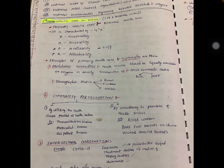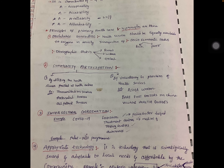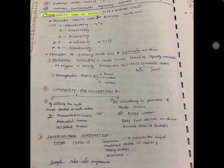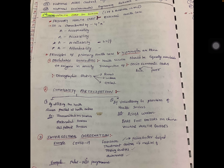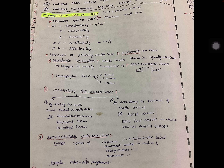The principles of primary health care are four: first, equitable distribution; second, community participation; third, intersectoral coordination; and fourth, appropriate technology. Equitable distribution means health services should be equally available to everyone in society, irrespective of socio-economic status — rich or poor — and demographic status.